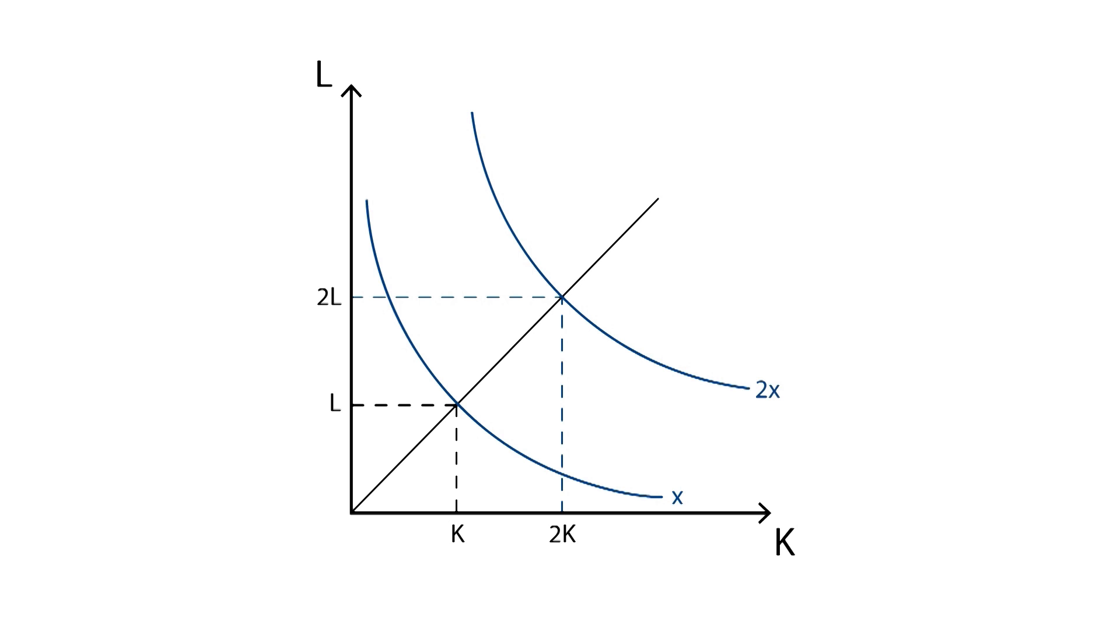This case is known as constant returns to scale, since total output increases proportionately to the increase in the productive factors. However, it may occur that this increase in inputs is followed by a less than proportionate change in outputs. This is the case for decreasing returns to scale.